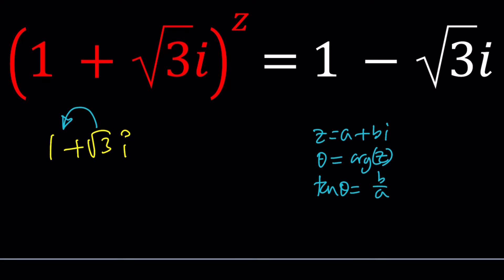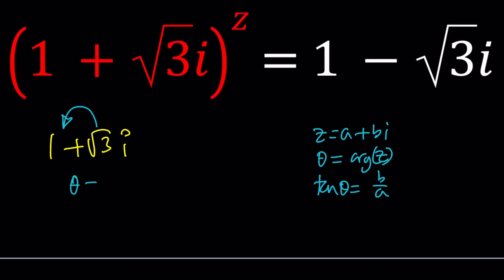So in this case, tan θ would be √3 which is positive, but you also have to look at the cosine and sine values or a and b values. In this case, a and b are both positive, therefore you're in the first quadrant. So the argument or θ would be π/3 or 60 degrees. And the modulus obviously for this number is 2 if you take the absolute value.